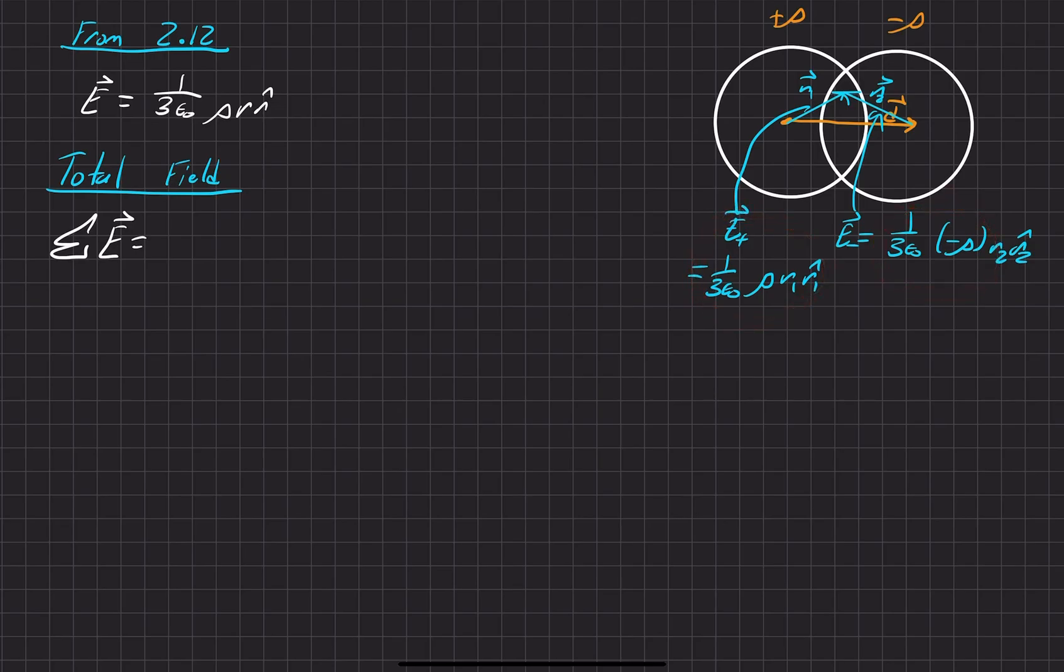So what we have is the E positive plus the E negative, right? And then what we have here is 1 over 3 epsilon naught, just exactly what we wrote here. r1, r2, oops sorry, that's r1 vector, minus, since we have a negative charge density here, we just went ahead and pulled that negative sign from the charge density out to the front there.